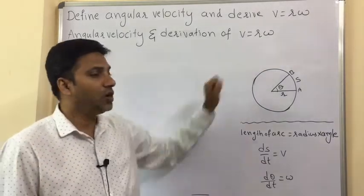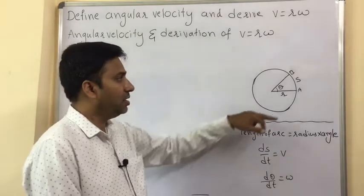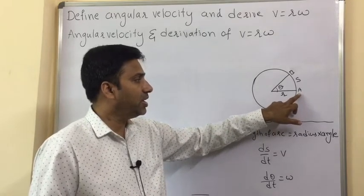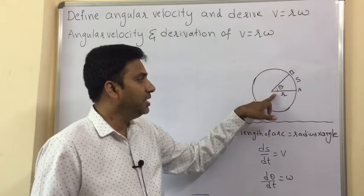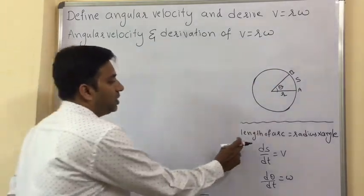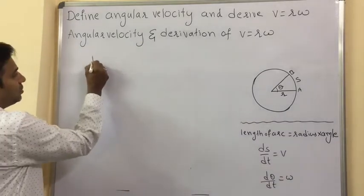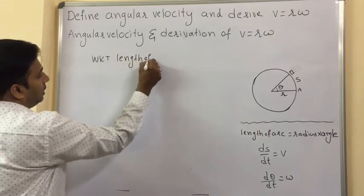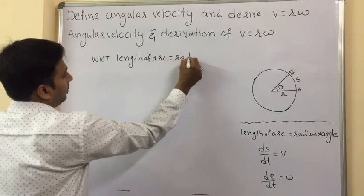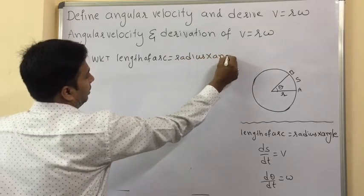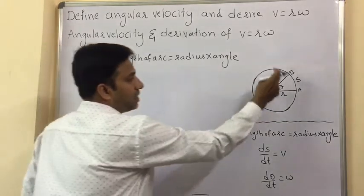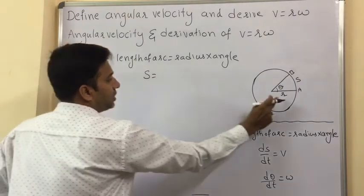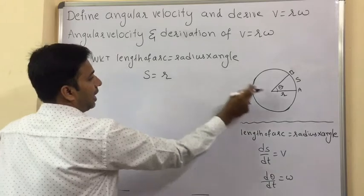Consider an object rotating on the circumference of a circle of radius r. Initially the particle is at point A and afterwards it moves to point B, making an angle theta. We use the formula: length of arc equals radius into angle. So arc AB equals s, radius is r, and angle is theta — giving s equals r-theta.